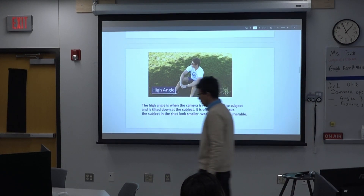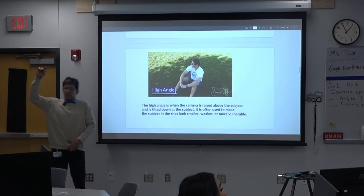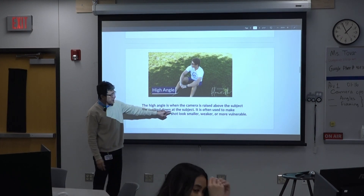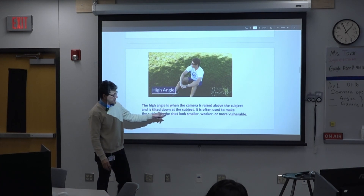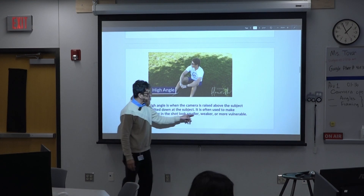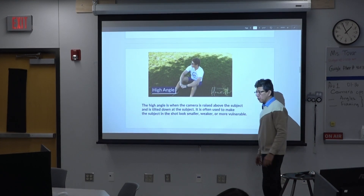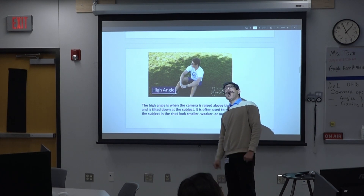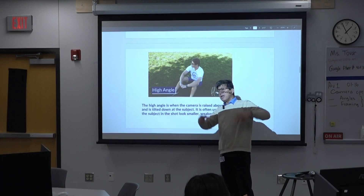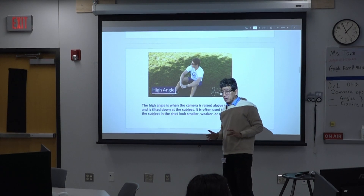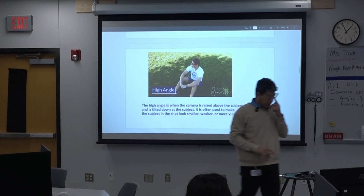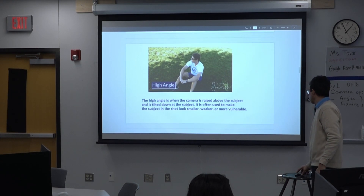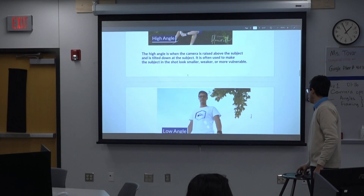This is a high angle frame. The camera is raised above the subject and tilted down. The high angle is often used to make the subject look smaller, weaker, or more vulnerable. If I want to look weak, I just look up, put the camera up here angling down, and I will look weak and small compared to everything else. That is the shot we see in many movies to convey vulnerability.